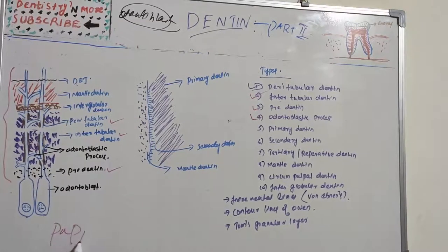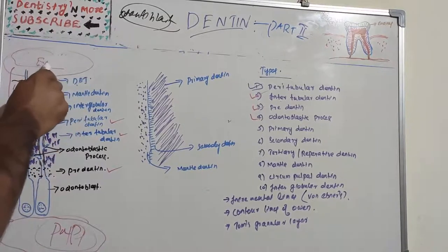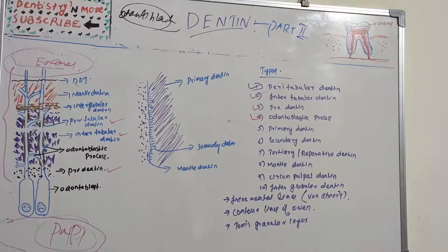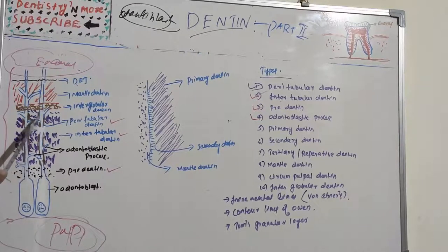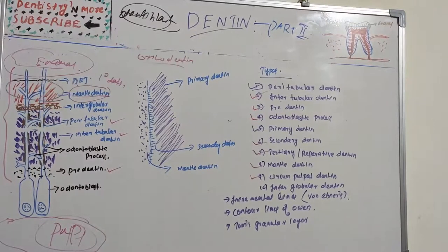The odontoblast is positioned between the pulp and the predentine border. The cytoplasmic processes are largest in diameter near the pulp and taper toward the dentine. The cell bodies are approximately 7 micrometers in diameter and 40 micrometers in length.